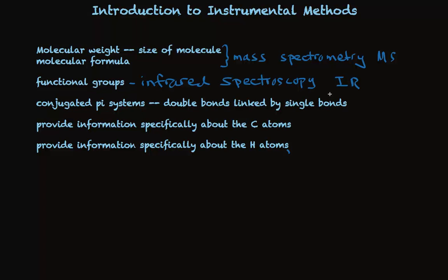The technique that looks directly at conjugated pi systems, sometimes other things, but mostly conjugated pi systems, is called UV visible spectroscopy. The IR is infrared spectroscopy, and the UV visible is also spectroscopy. And an abbreviation for this is UV visible spectroscopy.